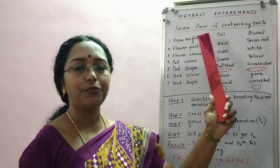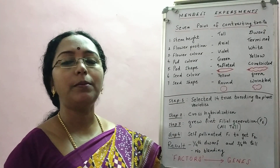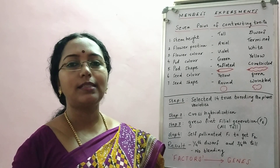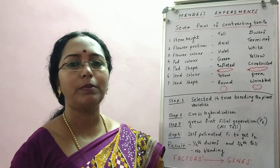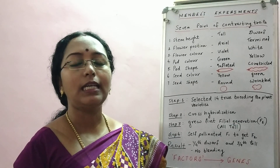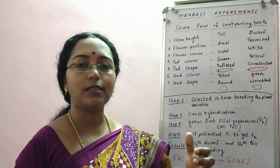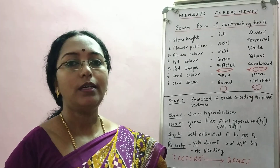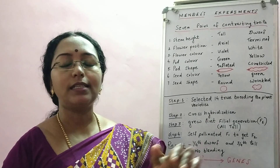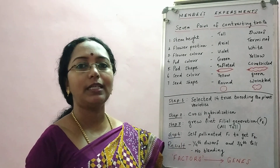The core area we are focusing on today is Mendel's experiments. As you all know, for any experiment there will be an aim, principle, procedure, results, interpretation, and conclusions. But Mendel was not doing a formal experiment — he didn't have a specific aim as such. He followed a set of procedures and used statistical analysis and mathematical logic to gain his results and interpretations.